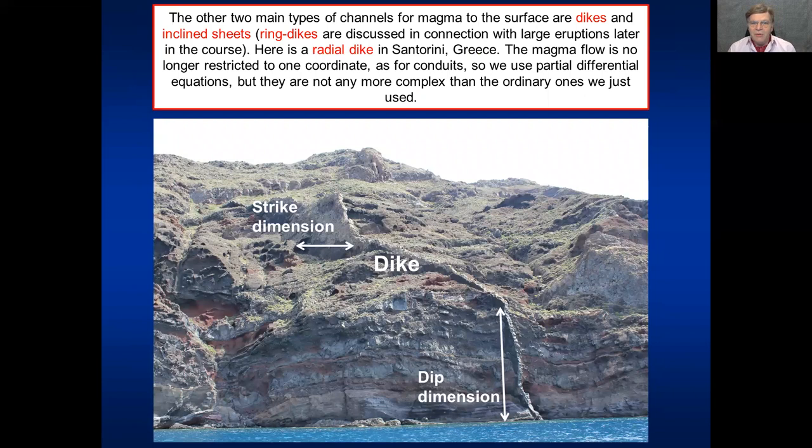So now we are coming to the other main channels, in fact, the main channels of magma to the surface, namely dikes and inclined sheets. Of course, ring dikes come into play in collapse calderas, but we discuss those in the next talk or later talks in the course. So here we have a radial dike in Tenerife. And the flow is not necessarily vertical, it can be horizontal, and if the dike is very thick, also horizontal slightly in this direction. So we are not dealing anymore with the flow in only one direction. So we use not an ordinary differential equation, we use a partial one, but the difference is tiny and the equations are of a similar style.